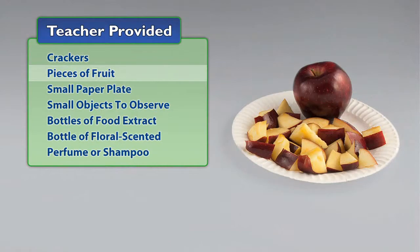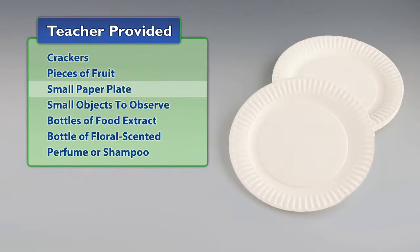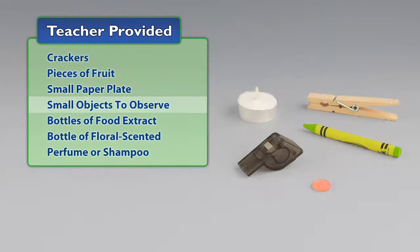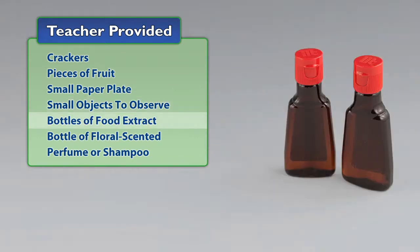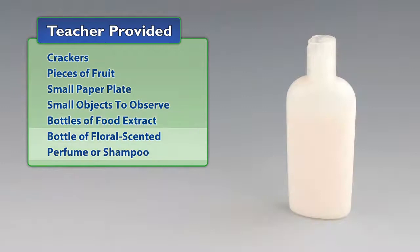You will also need to provide crackers, pieces of fruit such as an apple or a banana, small paper plates, small objects to observe such as wooden blocks, crayons and colored pencils, fabric swatches, marbles and shells, bottles of food extract such as mint, lemon, banana, or vanilla, and a bottle of floral scented perfume or shampoo.